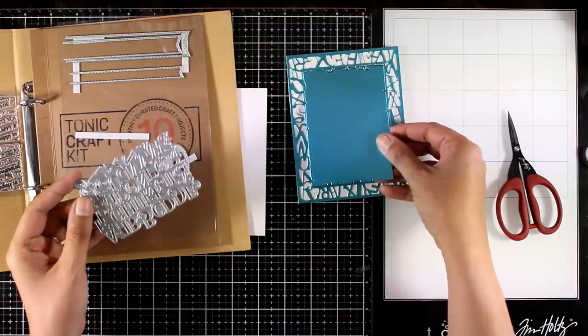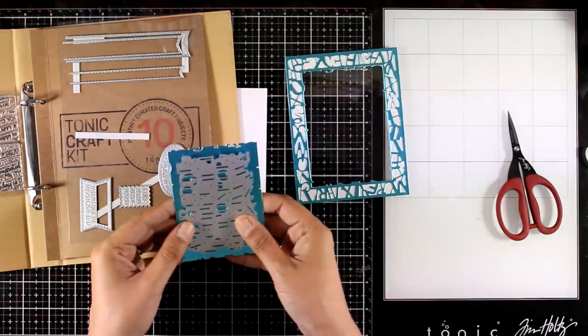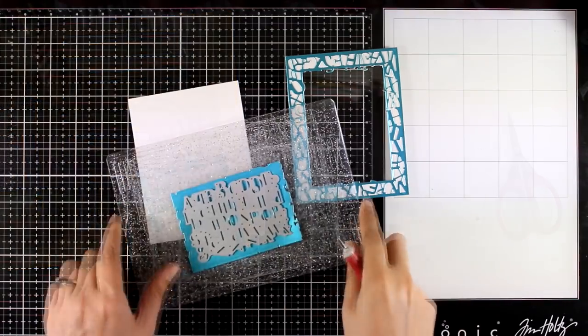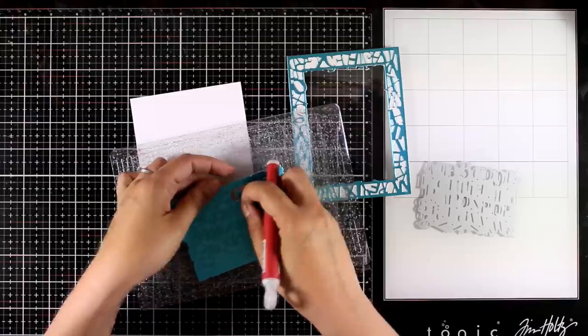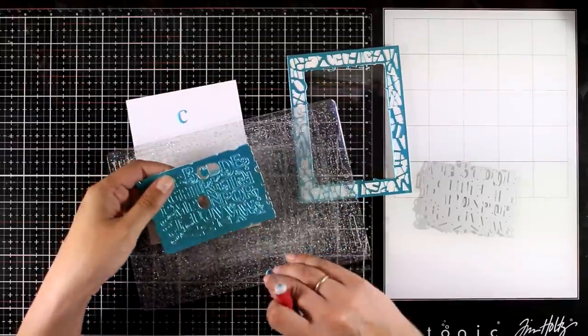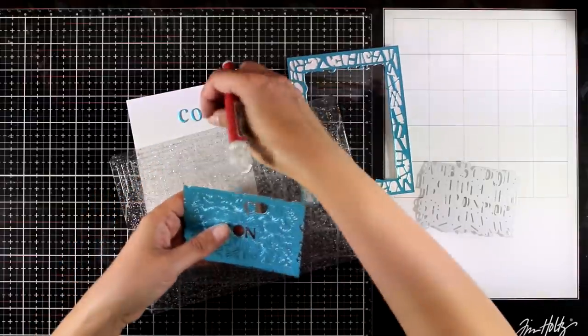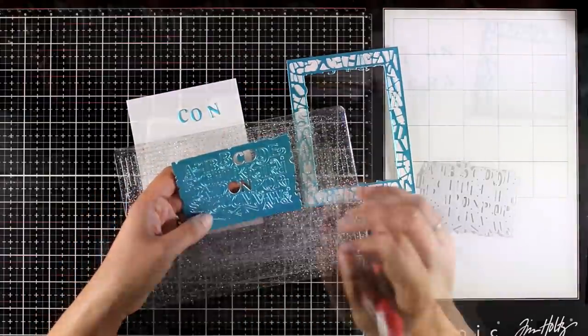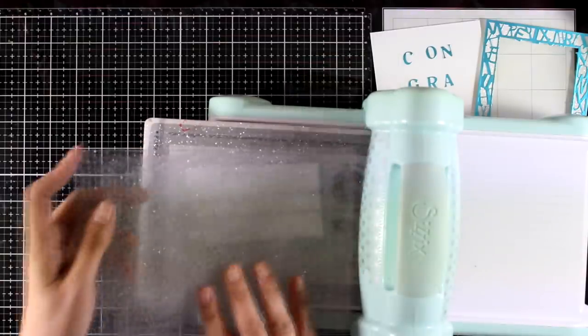Now I'm going to use the die to cut out my words for the sentiment on this card. I am going to use the scrap that I have from this cut out. This die is going to cut out a couple of alphabets in different fonts, but I'm going to choose only one of them and write my word, which is going to be congrats. I think that this frame with all those letters is perfect for back to school cards as well as graduation cards.